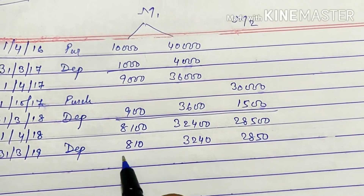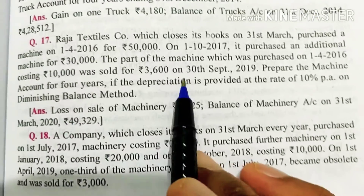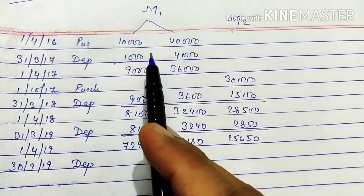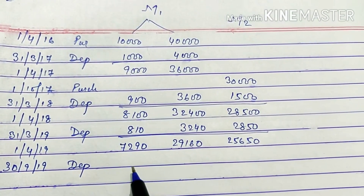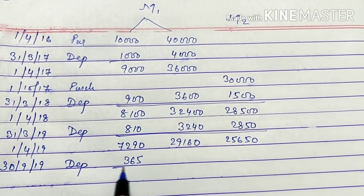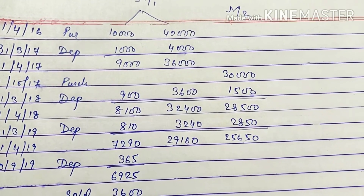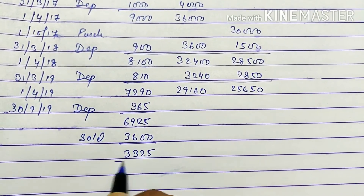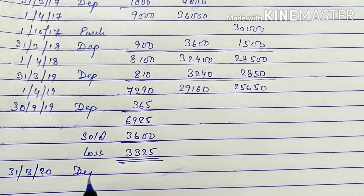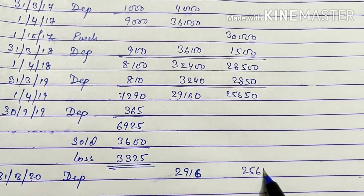Using the diminishing balance method, we arrive at the figures for 31st March 2019. Now on 30th September 2019, the 10,000 part (originally purchased 1st April 2016) is sold. The loss on this sale comes to Rs. 3,325. The year ends on 31st March 2020, and depreciation on the remaining two machines gives Rs. 2,916 and Rs. 2,565.